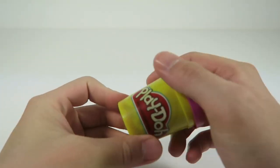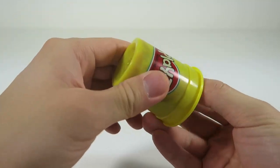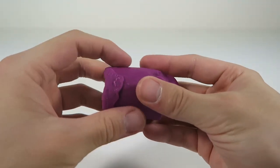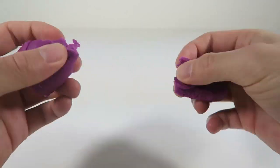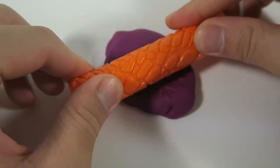Let's start with the purple Play-Doh. To create a design, just use the roller and flatten out the Play-Doh.